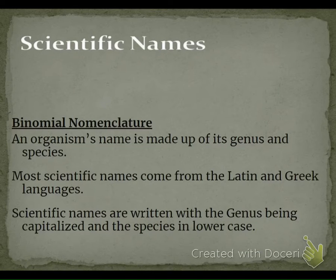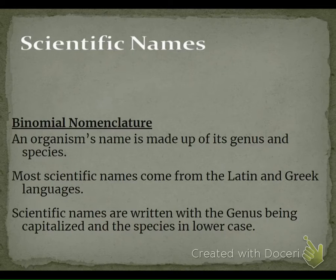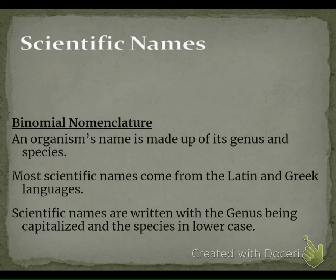Binomial nomenclature literally means 'two-name naming system.' You need to write down that it deals with the genus and the species — that's where it gets its name. Scientific names come from Latin and Greek. The genus is capitalized — the first letter — and the species is all lowercase. Go ahead and write or type that out: scientific names come from Latin and Greek, the genus is capitalized, and the species is all lowercase.